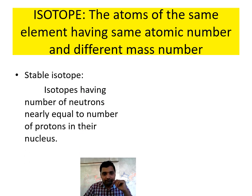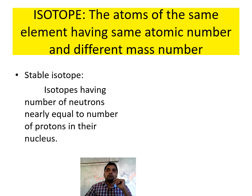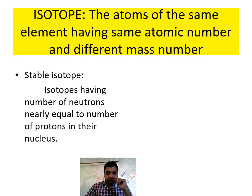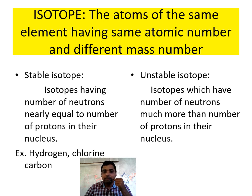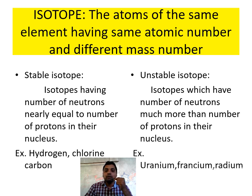Isotopes are of two types. One is stable isotopes and the other is unstable isotopes. Stable isotopes are those where the number of neutrons in the nucleus is nearly equal to the number of protons — these are elements with atomic number less than 83. Unstable isotopes are those where the number of neutrons is much more than the number of protons. These are elements with atomic number more than 83, such as uranium, thorium, and radium.